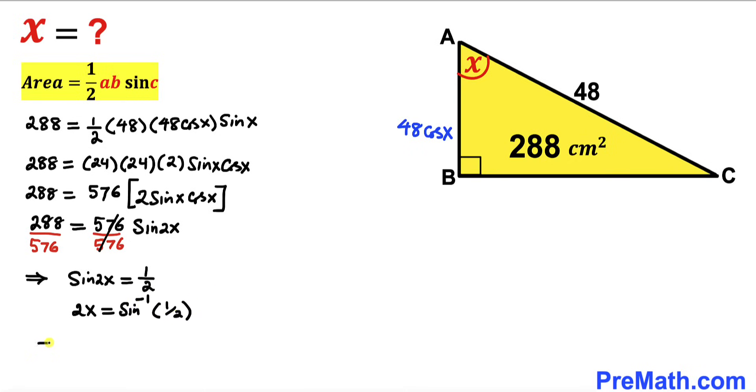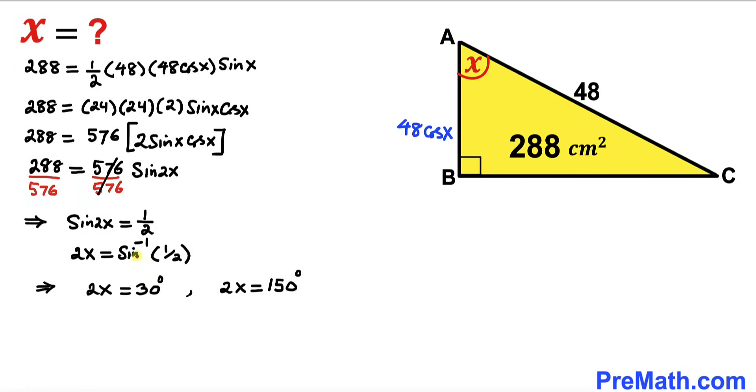We can see that we're going to get two angles: 2X equals either 30 degrees or 2X equals 150 degrees. Let's focus on this first equation. Dividing both sides by 2, our X angle turns out to equal 15 degrees.